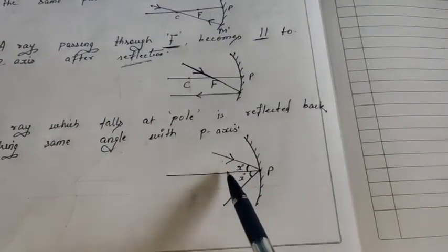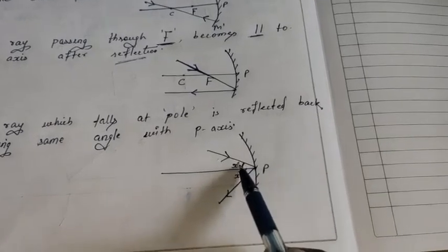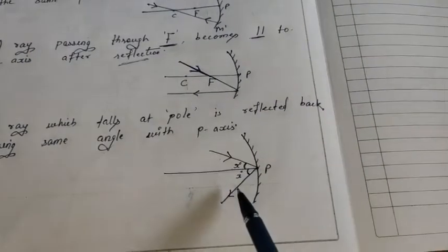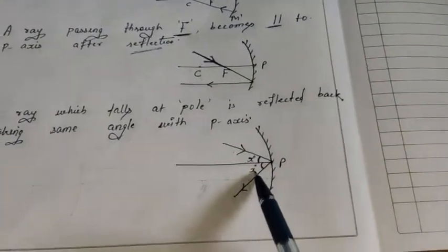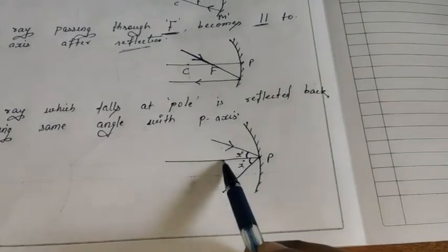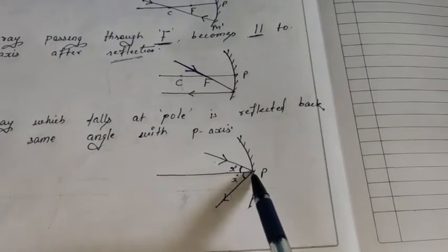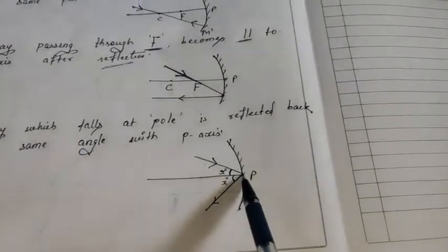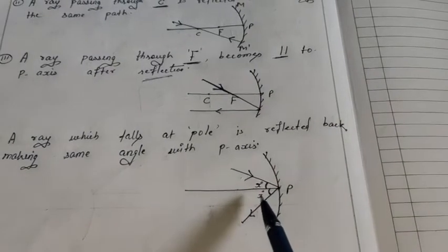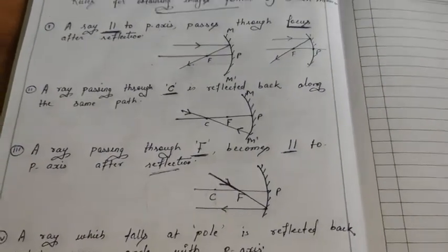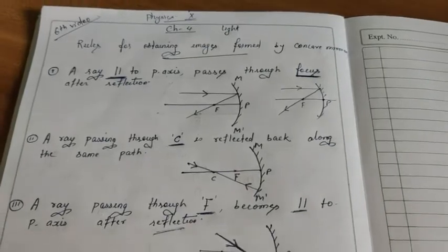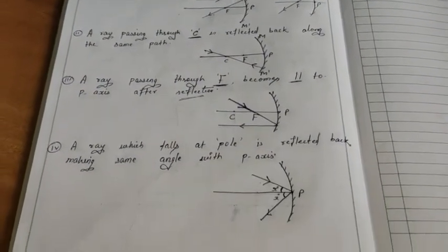Incident ray principal axis ke saath pole par jitna angle banaata hai, reflected ray principal axis ke saath pole par utna hi angle banaayega. Yeh sabse important rule tha. Chaaron rules ka use karenge tabhi humko image formation samajh mein aayega, jo hum aage padhne jaayenge. Thank you students for watching this video.